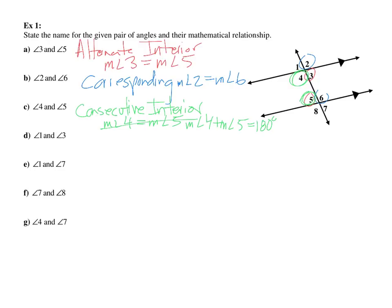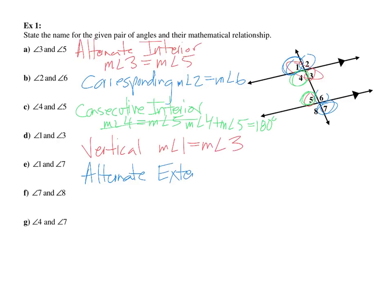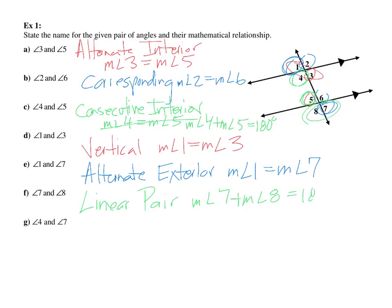Angles one and three are simply vertical angles, drawing on knowledge from previous chapters. Angles one and seven are alternate exterior, so measurement of angle one equals measurement of angle seven. Angles seven and eight are a linear pair and are supplementary. Angles four and seven have no name among our four types, so when there's no name between the two groups, those angles are supplementary.